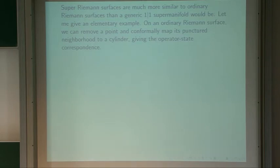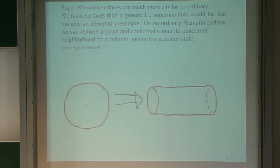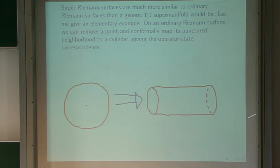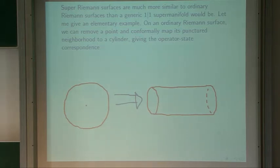On an ordinary Riemann surface you can remove a point and conformally map its punctured neighborhood to a cylinder. A punctured disk is conformally equivalent to an infinite cylinder — the home of a propagating string. The string state is defined on a circle that propagates along the cylinder.